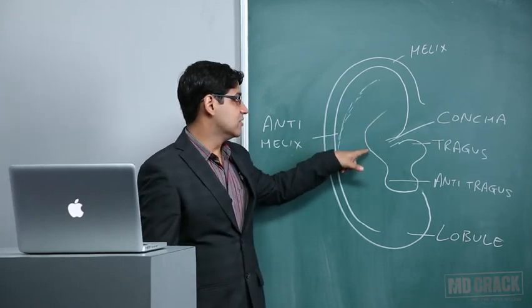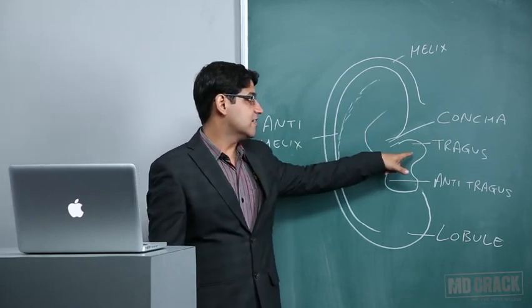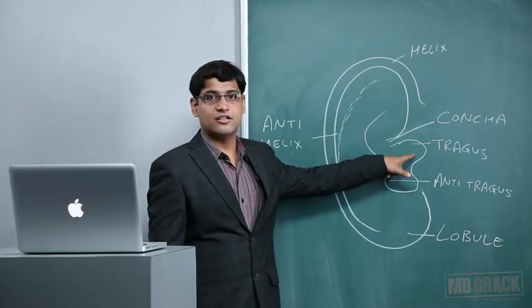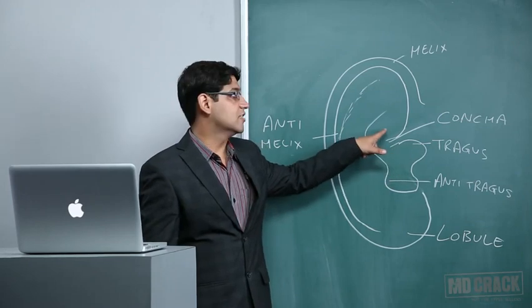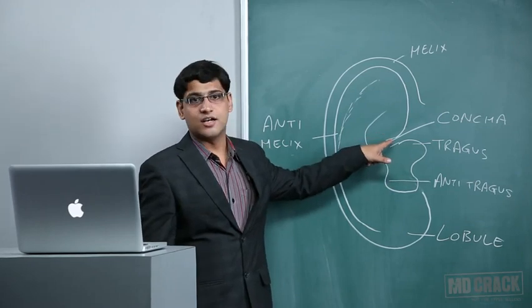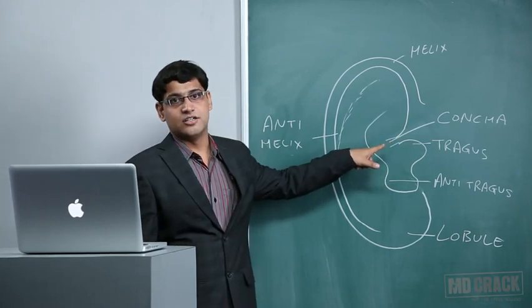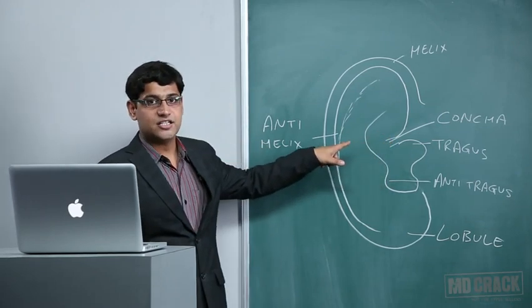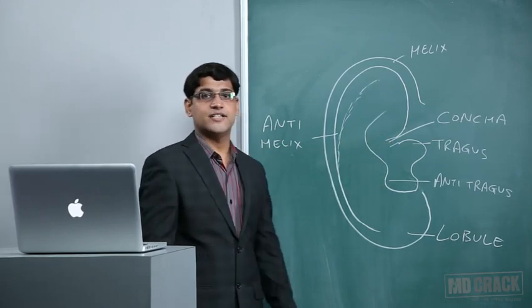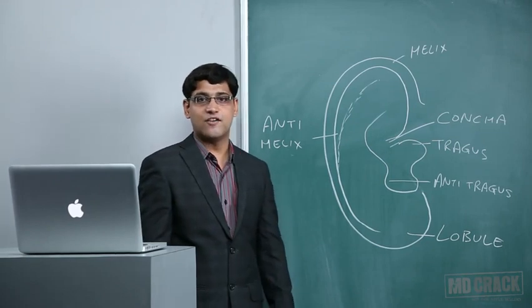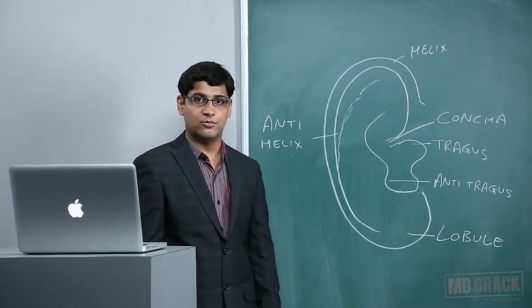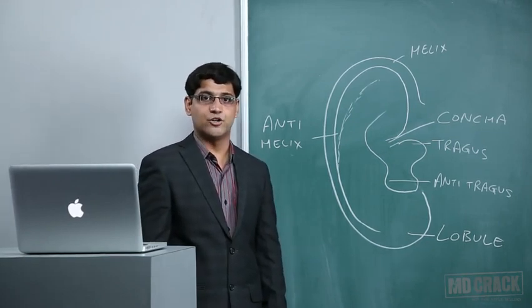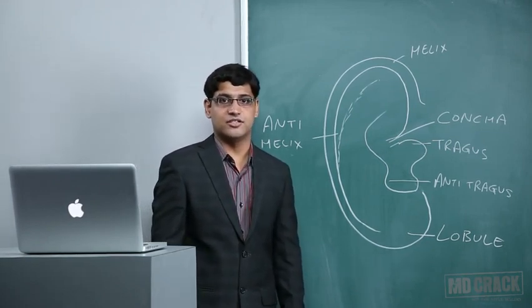The cartilage adjacent to the external auditory meatus is known as the conchal cartilage. This cartilage is important because it can be used as a graft material for various otoplasty and tympanoplasty procedures.